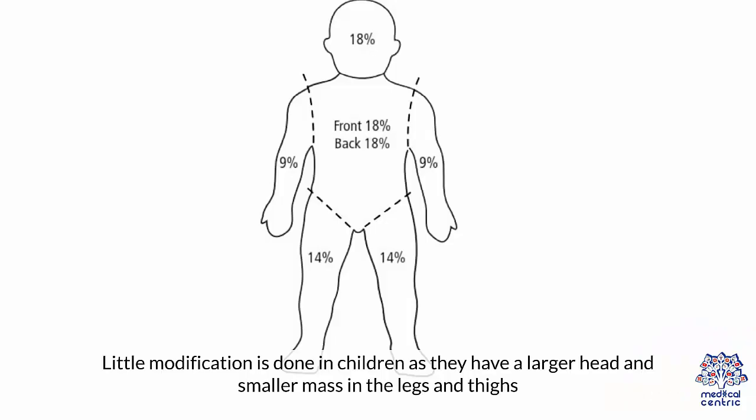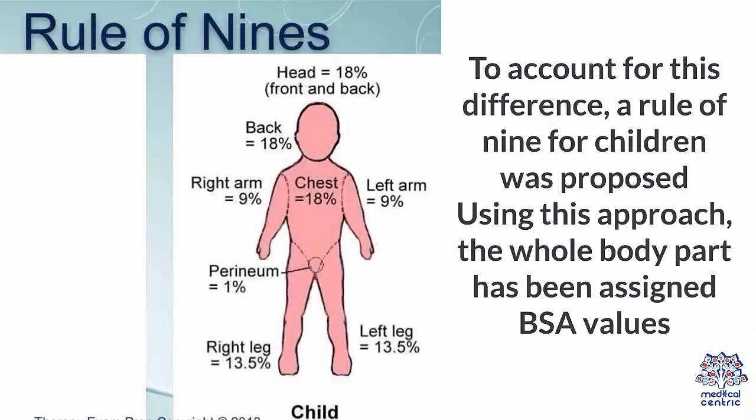Little modification is done in children, as they have a larger head and smaller mass in the legs and thighs. To account for this difference, a Rule of Nine for children was proposed.